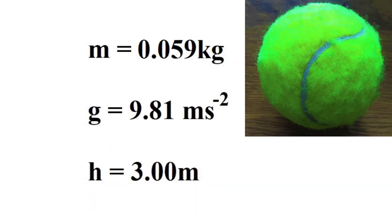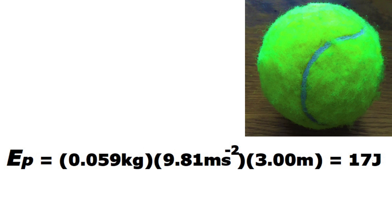So let's calculate the GPE of this tennis ball at its highest position. We're going to assume a constant value for acceleration due to gravity, so we need to find out two things: the mass of the tennis ball, and the height of the ball's position in relation to the ground. This tennis ball is thrown 3 metres above ground level at its highest position and has a mass of 0.059 kilograms. We're going to assume that acceleration due to gravity, when air resistance is negligible, has a value of 9.81 metres per second squared.